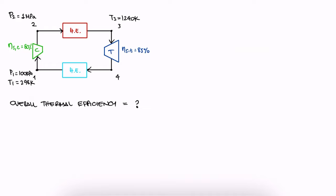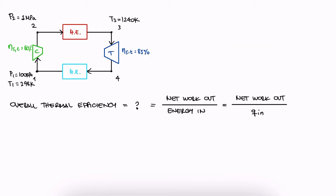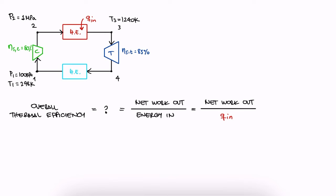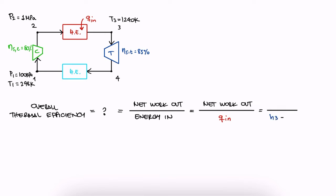The thermal efficiency of this cycle is the amount of work that we can get out of it over the total amount of energy coming into the system. This energy, supplied to the system, will be the heat in, which happens between the compressor and the turbine between 2 and 3. Therefore, this heat in per unit mass is h3 minus h2.